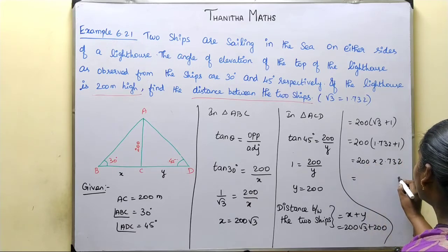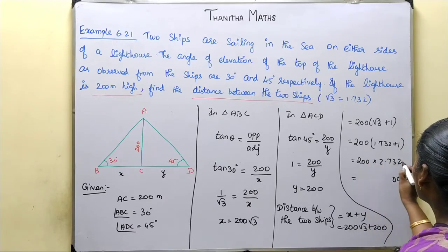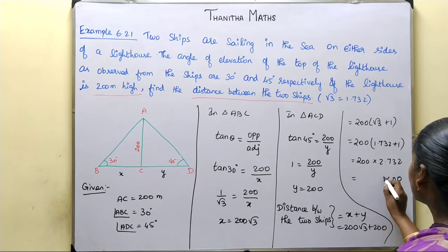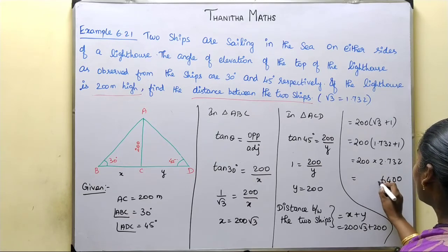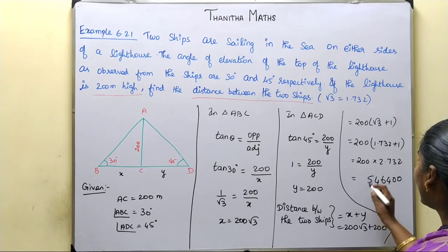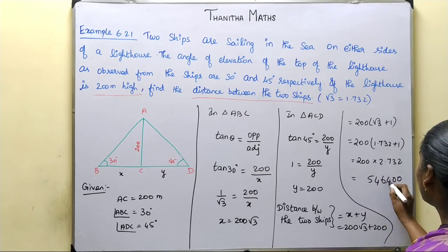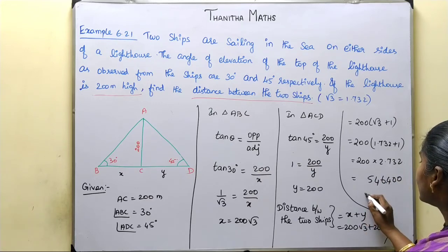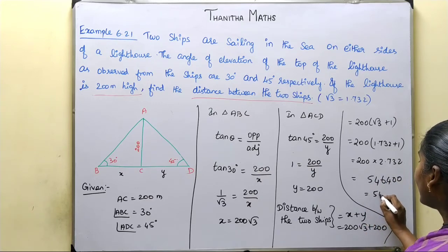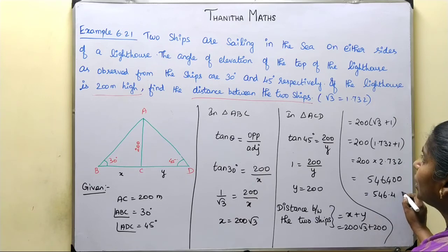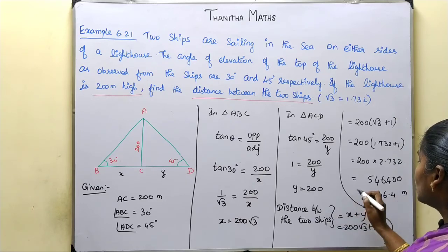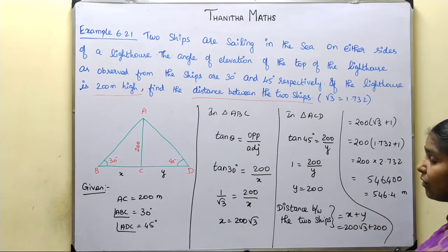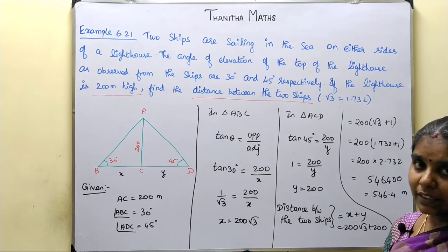Now we multiply: 200 multiplied by 2.732. Carrying out the multiplication, the result is 546.4 meters. Therefore, the distance between the two ships is 546.4 meters.